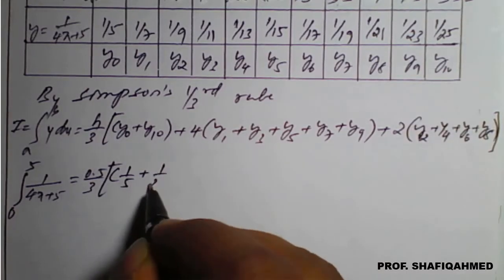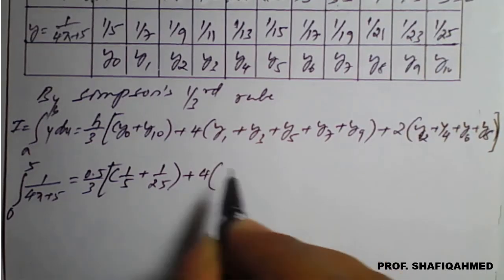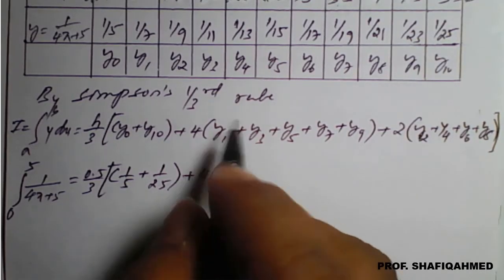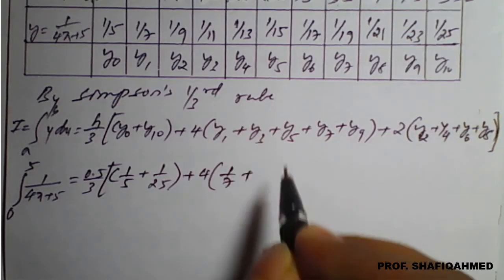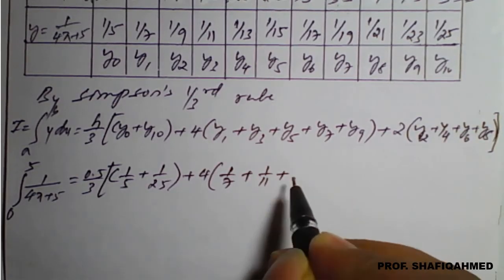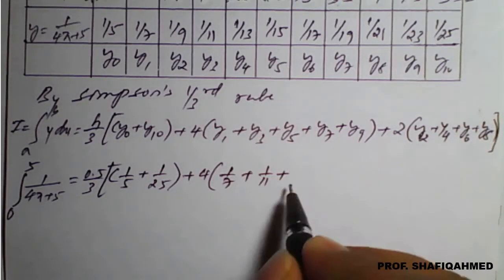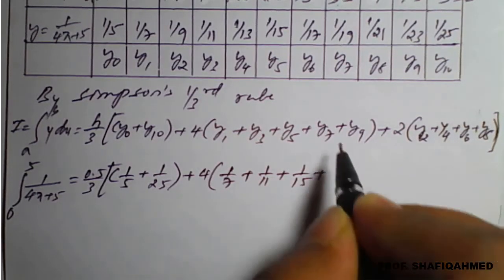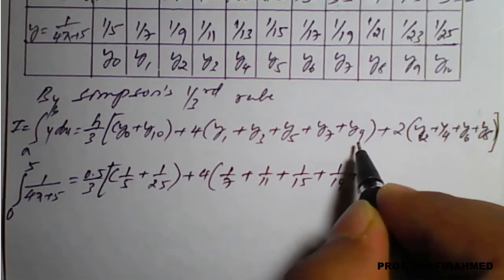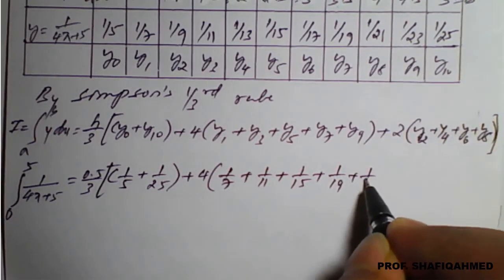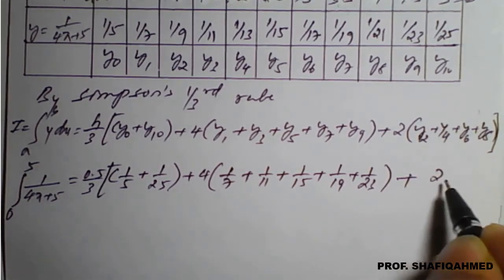Plus 4 times bracket of: y1 value is 1 upon 7, y3 value is 1 upon 11 — these all you have to enter from the table — then y5 value is 1 upon 15, y7 value is 1 upon 19, y9 value is 1 upon 23.